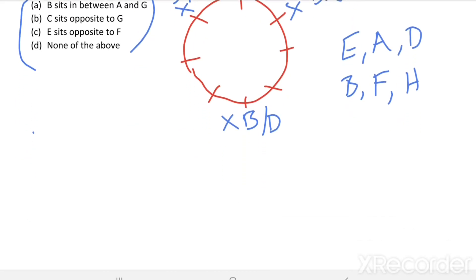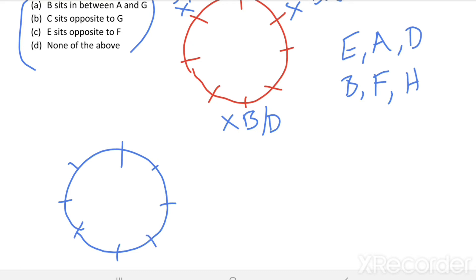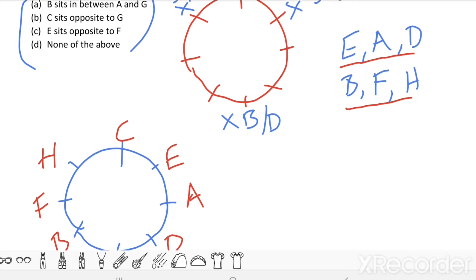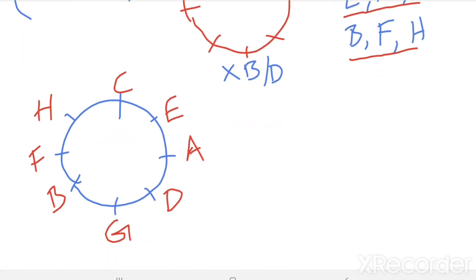Let us draw the table again. Suppose C is sitting here, then E, A, D are sitting together. I am placing E here, A here, D here. And B, F, H are sitting together — H here, F here, B here. F is sitting in between H and B. Then the remaining student G is sitting opposite to C.